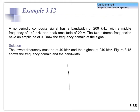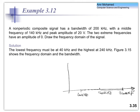In the frequency domain, the middle frequency is 140 kilohertz. The bandwidth is 200 kilohertz, so we go 100 kilohertz on each side — giving 240 kilohertz on the upper end and 40 kilohertz on the lower end. The two extreme frequencies have an amplitude of zero, and the peak amplitude is 20 volts. So the signal might look like a shape that peaks at 20 volts in between those extreme frequencies.